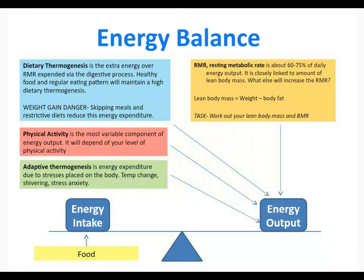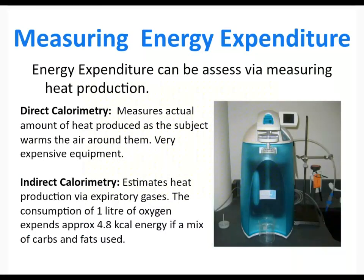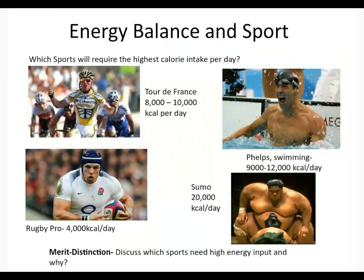Here's a more detailed look at energy balance, with two other methods of energy output. Dietary thermogenesis is the amount of extra energy you need to digest your food — healthy food with a lot of fiber actually requires more energy to digest, which can help with losing or maintaining weight. For measurement, a direct calorimetry pod measures all the heat produced during exercise to get a very accurate look at energy usage. More practically, sports scientists use indirect calorimetry, measuring expiratory gases produced to estimate energy use.